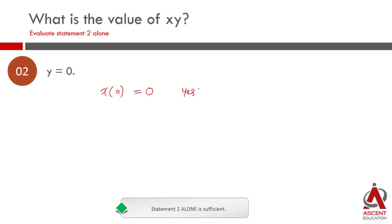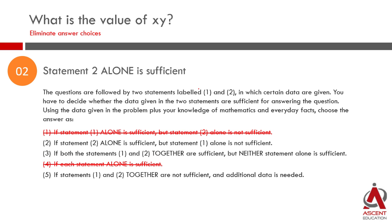Let us check out what could be the answers right now. Statement 1, we eliminated answer choices 1 and 4. Statement 2 alone is sufficient, so the answer choice has to be 2. We will eliminate the remaining 2. Answer choice 3 says both statements. We don't need both the statements. Answer choice 5 says the data is not sufficient. Statement 2 answers, so 5 is eliminated. The answer is choice 2.